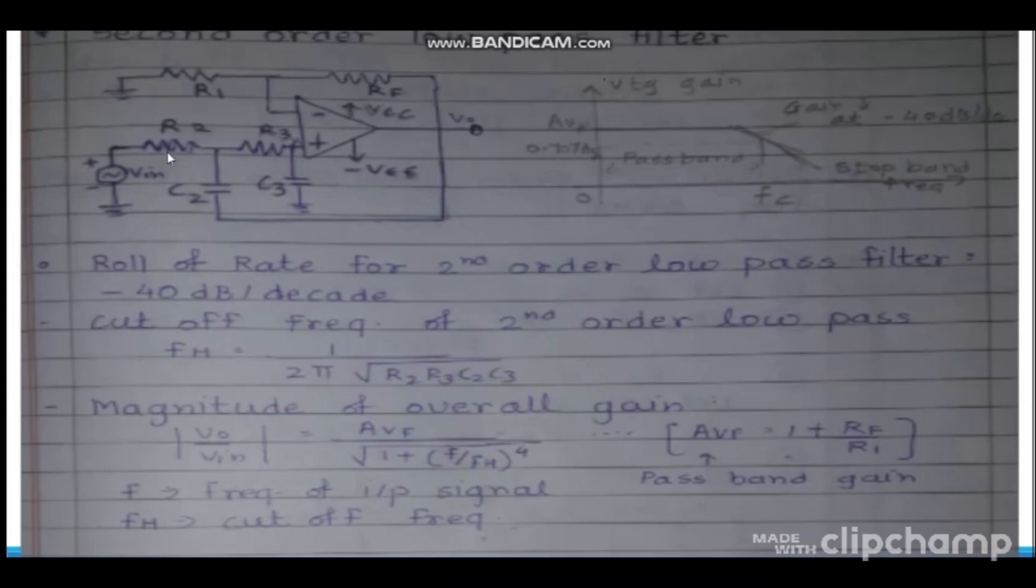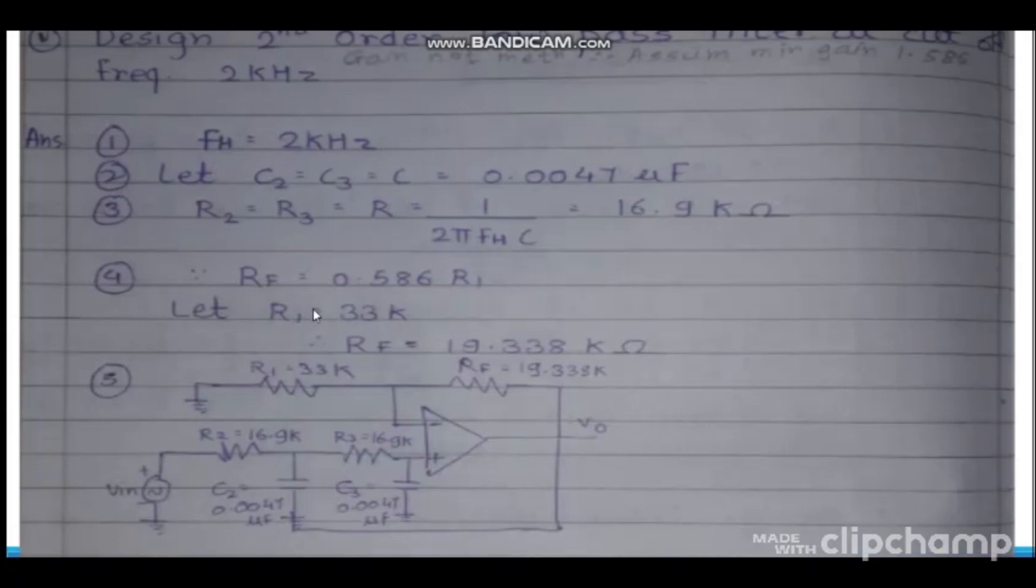Moving on to second order low pass filter. Second order low pass filter here - we have first order low pass filter plus an additional RC network here. So I already mentioned that if you want to find out the order of the filter, just look at the number of RCs. See here there are two RCs, so this is second order low pass Butterworth filter. The frequency response is exactly the same - it will be having a constant gain from 0 to high cutoff frequency FH, and then after that the gain will be decreasing. But note that here the roll-off rate is minus 40 dB per decade because it is second order low pass filter. The designing steps are exactly the same, but you need to keep in point that C2 and C3 values will be equal and R2 and R3 values will be equal. That is the only change over here, and the designing steps are exactly the same as compared to first order low pass filter.